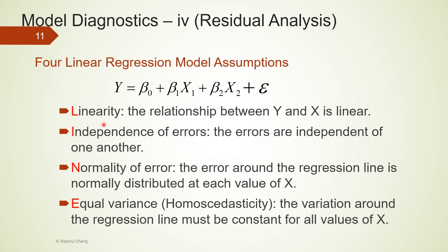Linearity refers to the relationship between x and y is linear. Independence of errors refers to the errors are independent of one another. N, normality of errors. The errors around regression line are normally distributed at each value of x. Equal variance, homoscedasticity. The variation around the regression line must be constant for all values of x. We have already checked the first linearity assumption using the scatter plots between each x and y. The remaining three will be checked using residual plots.